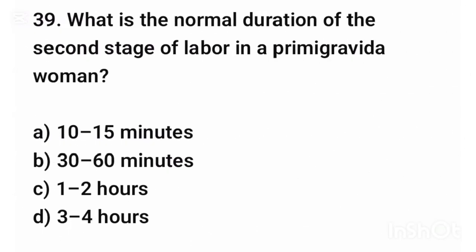Question number thirty-nine. What is the normal duration of the second stage of labor in a primigravida woman? The correct answer is option C: 1 to 2 hours.